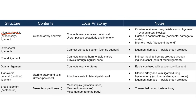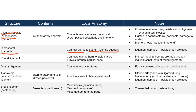Now that we've discussed the IP or suspensory ligament, let's talk about the utero-sacral ligaments. These connect the uterus to the sacrum, and this allows for support of the uterus. We can see the uterus here, the posterior surface, and the sacrum over here. The utero-sacral ligament connects the two, offering uterine support.